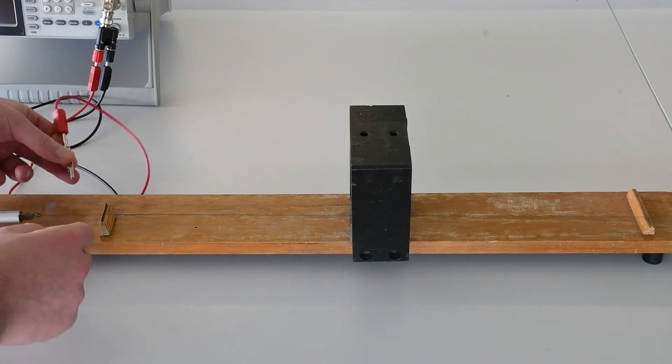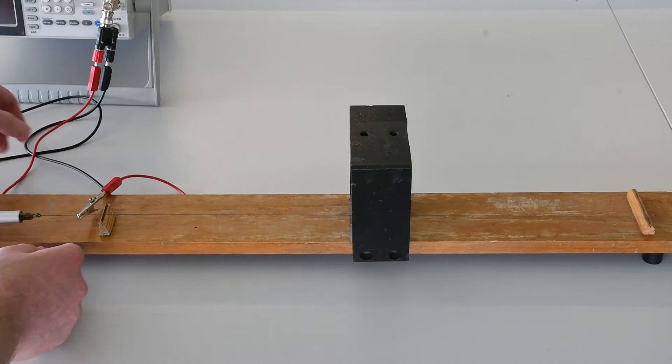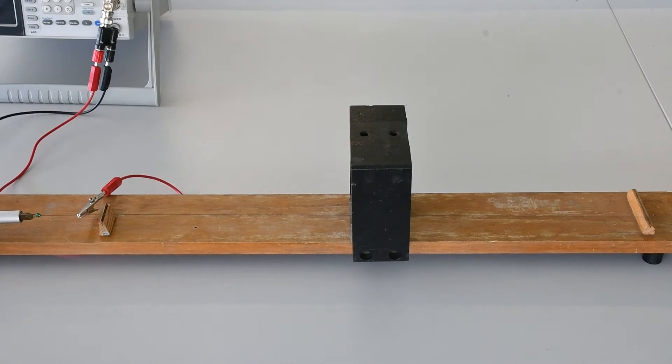With the bar magnet in place, we can then connect our signal generator to our wire. Make sure to connect the clips on the outside of the bridges.